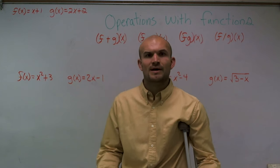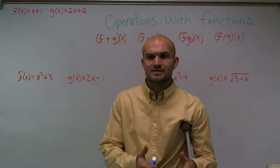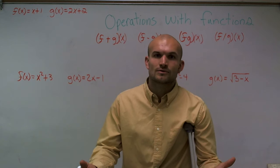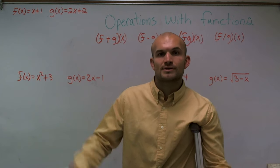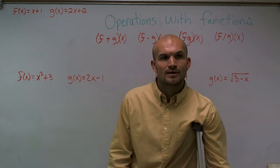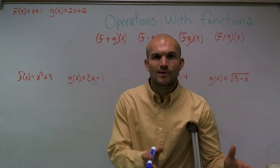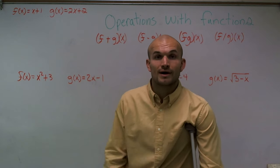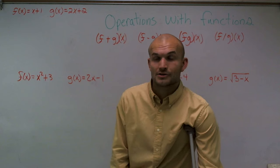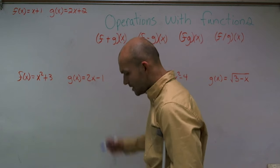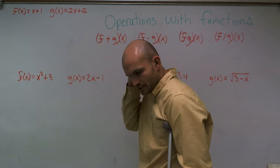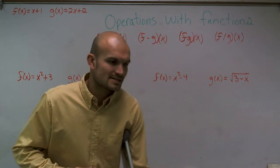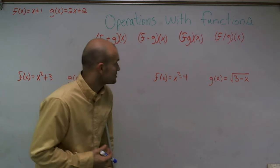However, with functions, a function's rule is an equation, like f of x equals x squared plus 1 or something. So how do we add an equation plus another equation? I'm going to show you here how to do that. A couple of things I want you to at least understand is how we write the operations of functions.